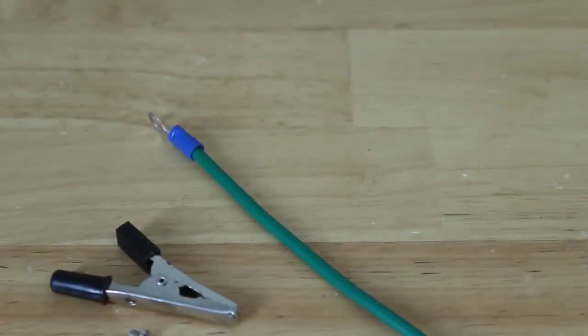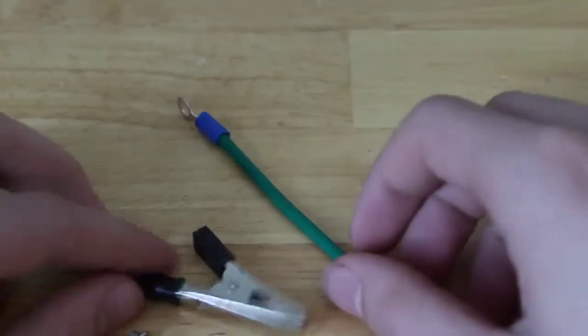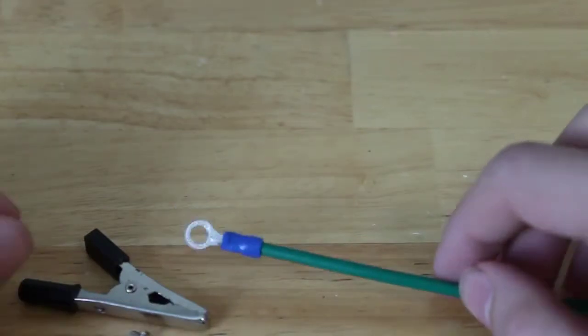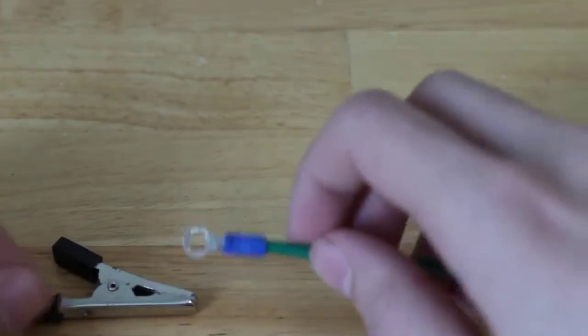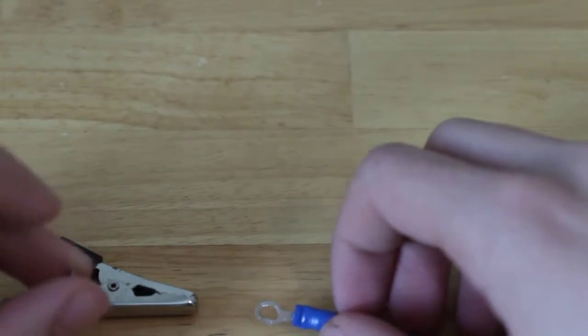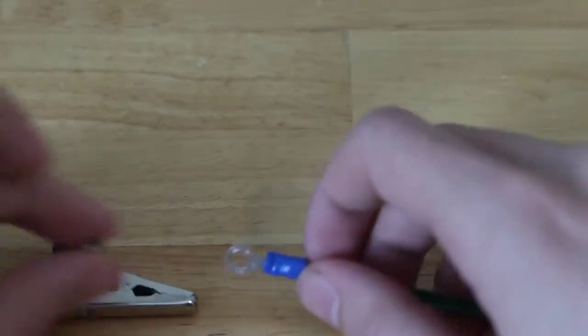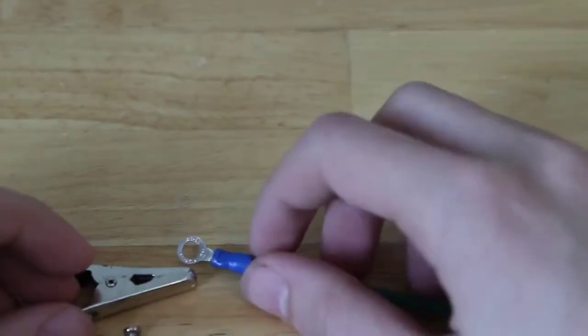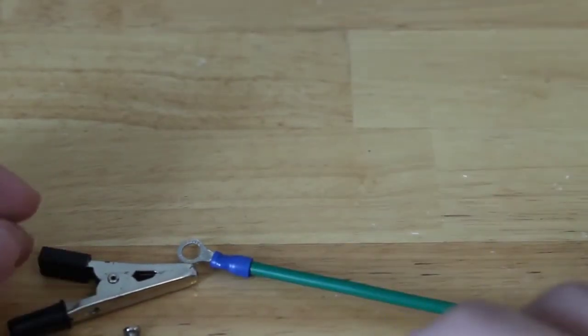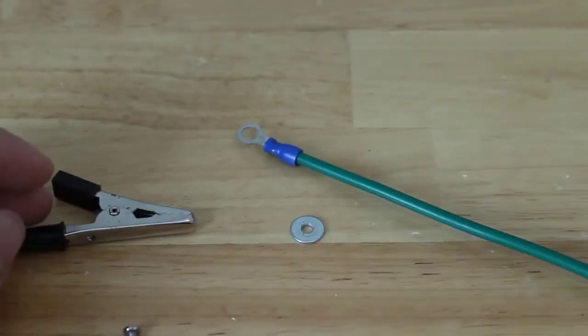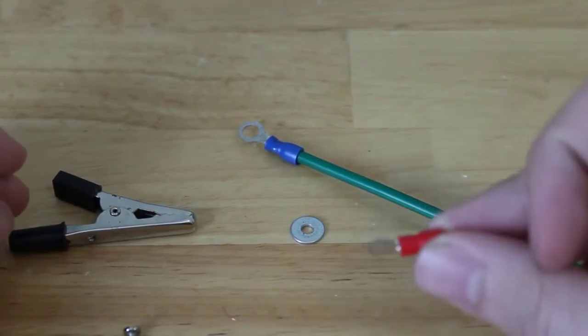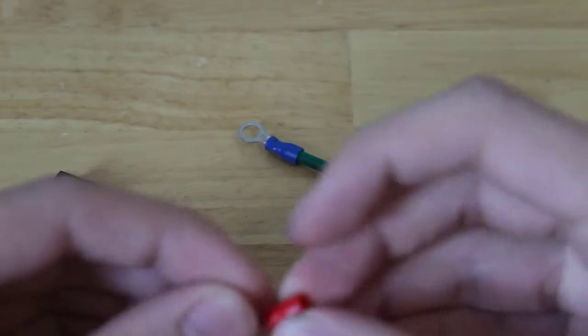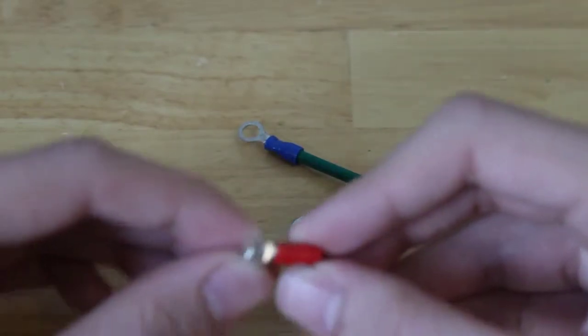Okay so the next thing we're going to do is attach the alligator clips to the end of the crimp connection. Now I actually made a mistake, I brought the wrong crimp connections. I thought that the screw for the alligator clip would not fit through the hole, but it does, so I'm just going to be using a washer. Now if you're going to make it, I suggest buying the smaller type, the red ones. They have a smaller hole and the screw for the alligator clips won't actually fit through them.